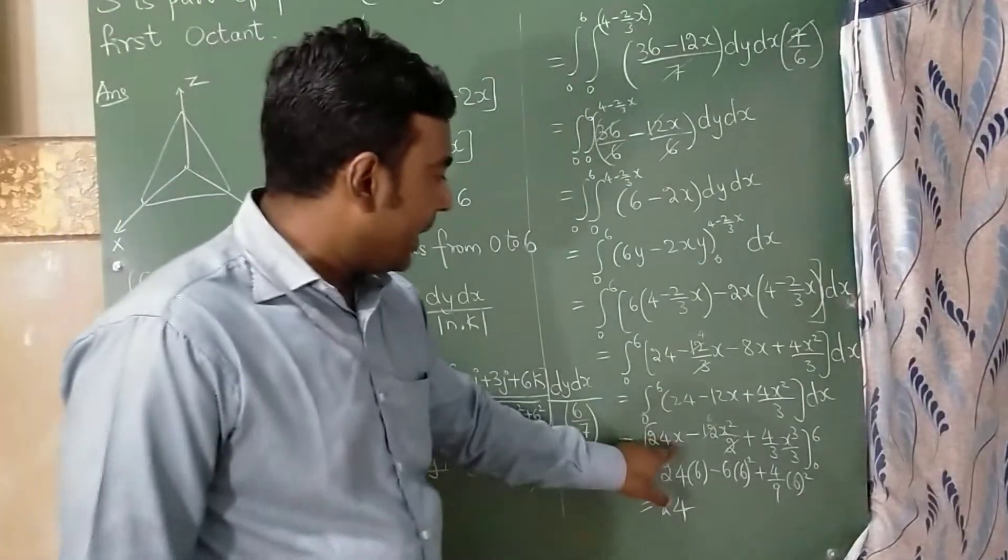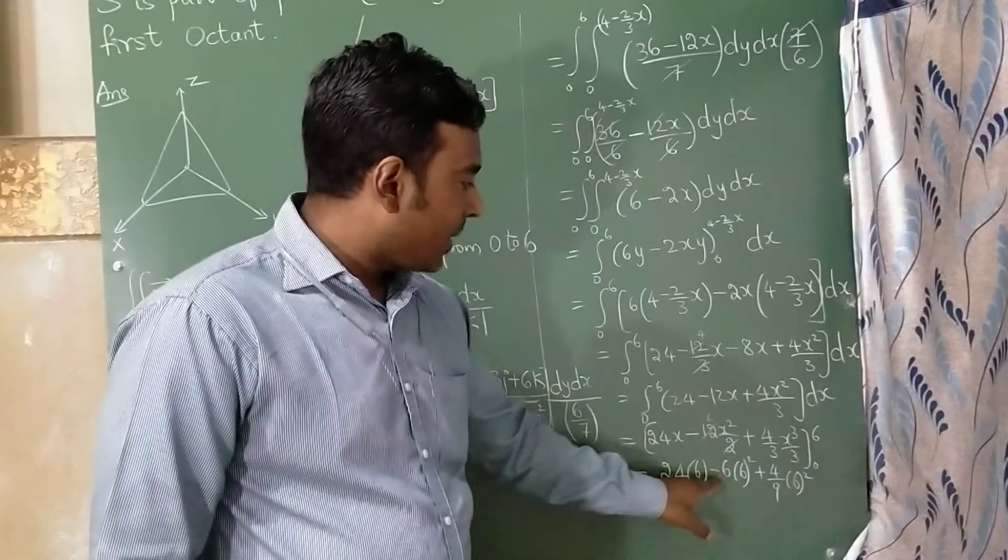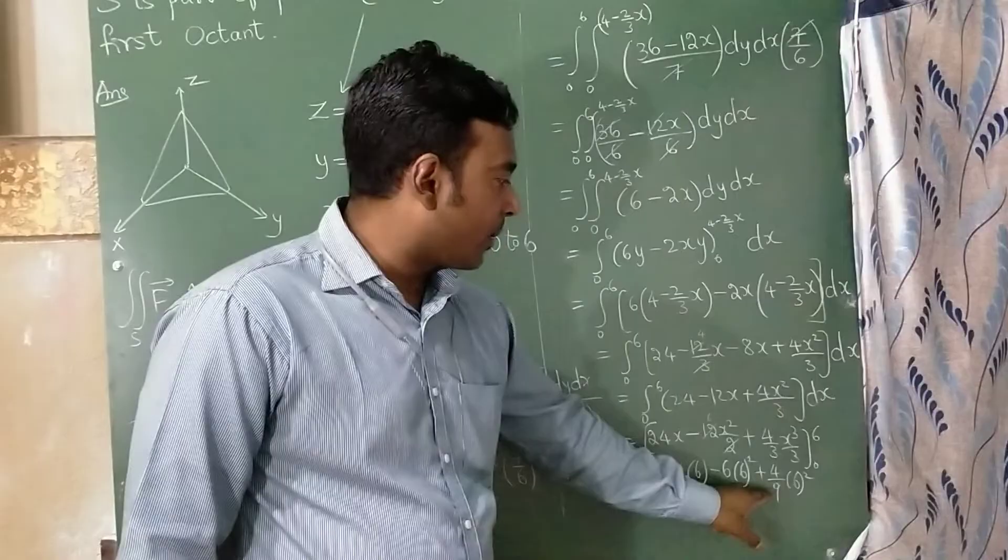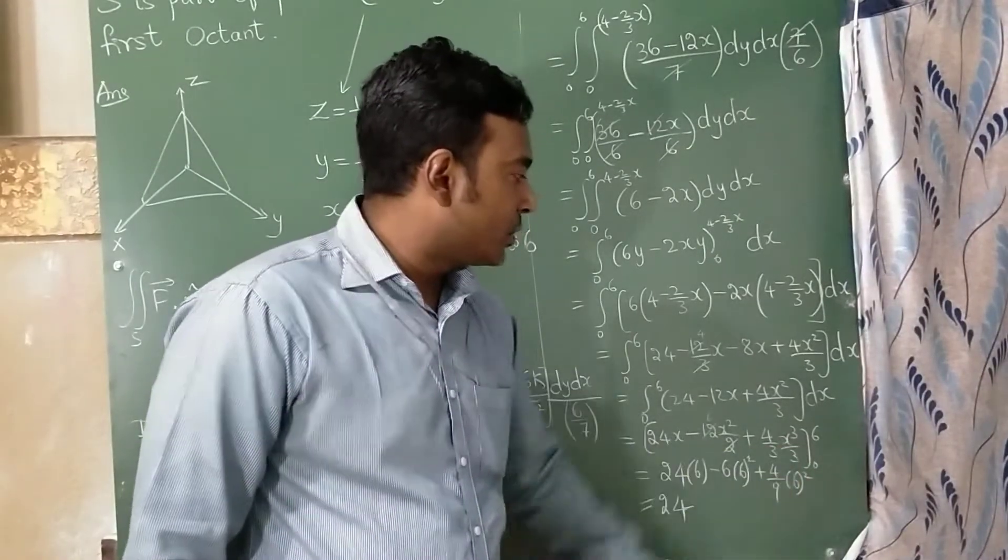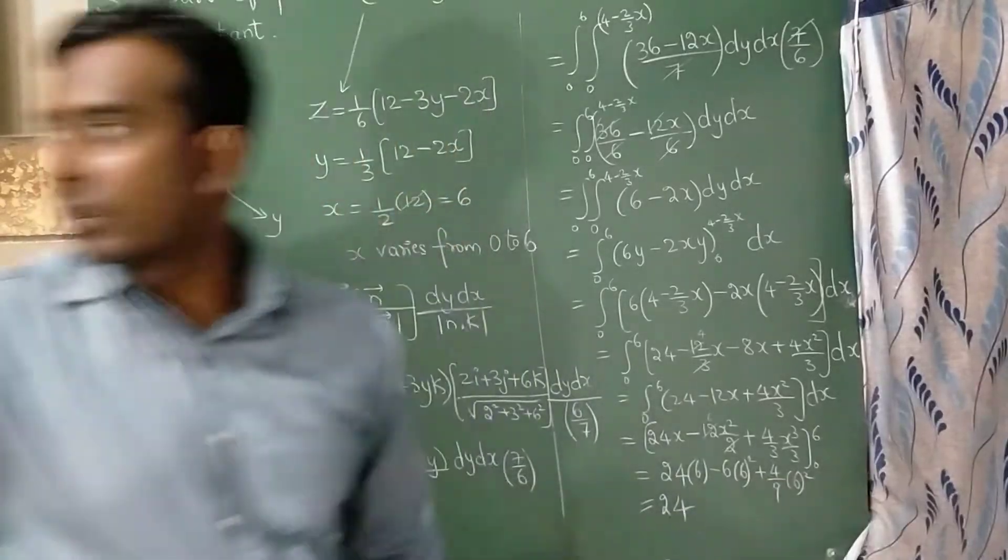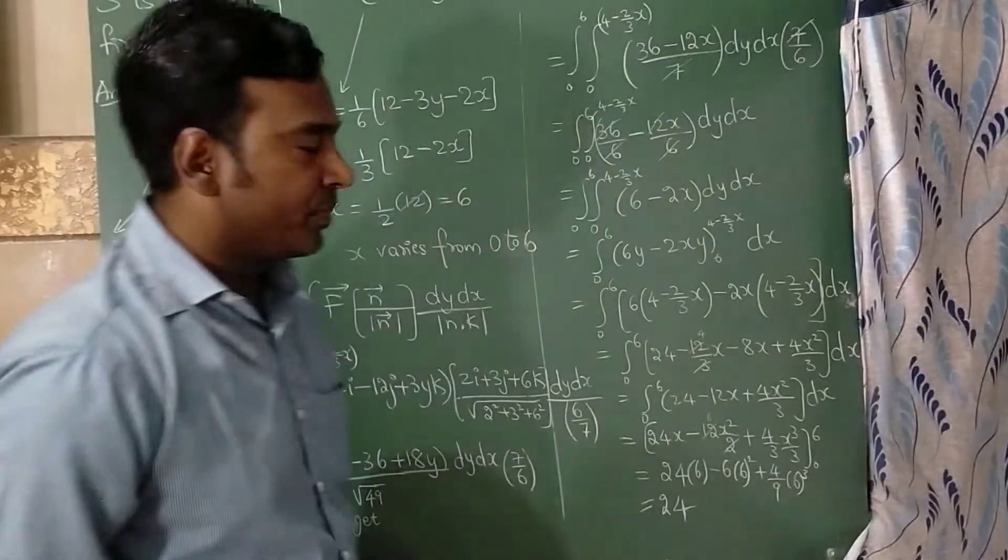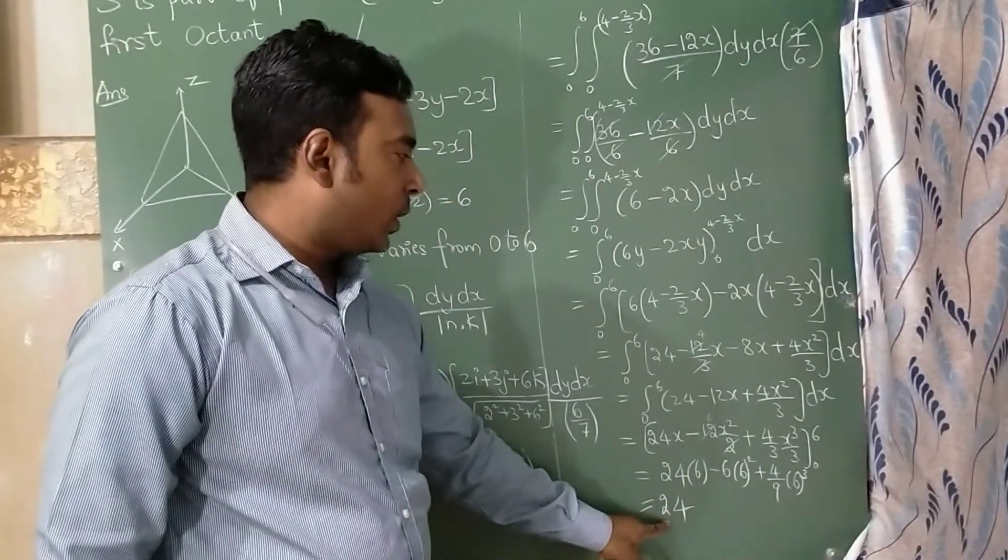Now in place of x, I am going to substitute upper limit that is 6. So 24 times 6 minus 6, here x is 6 square plus 4 upon 3, 3 times 9, and in place of x I have substituted 6. So I need to write here 6 cube. If you solve this in the calculator, you will get final answer as 24.